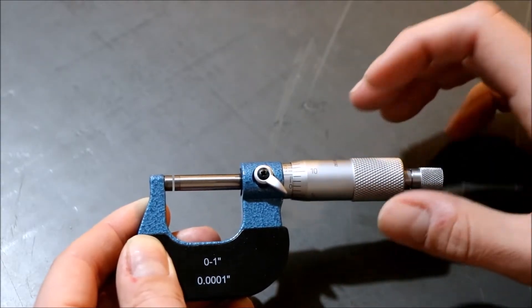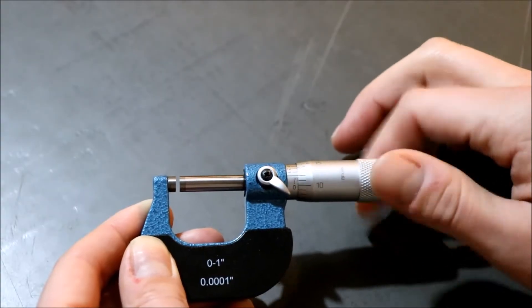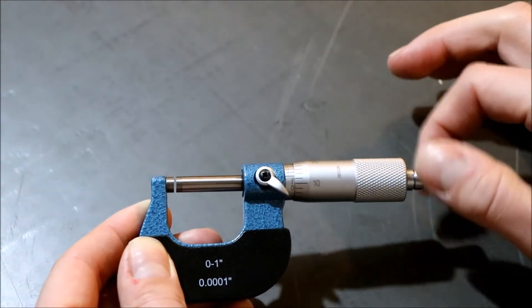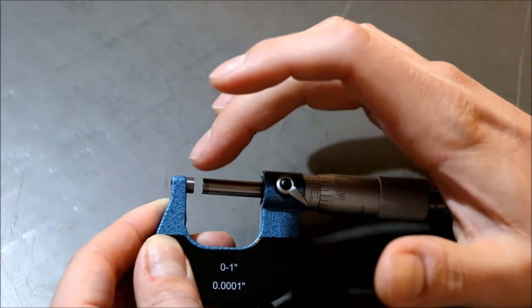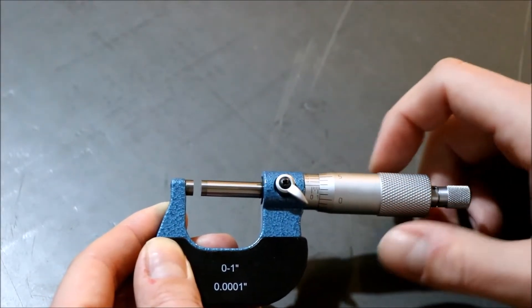zeroing this thing manually, just make sure that everything's spinning smoothly, that you're not getting any binding in your ratchet, and also make sure that everything is clean down here at your measuring surface, very clean, especially